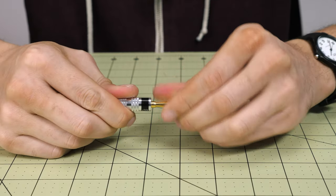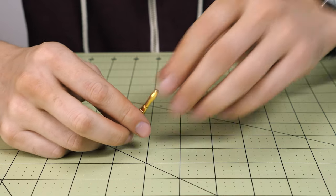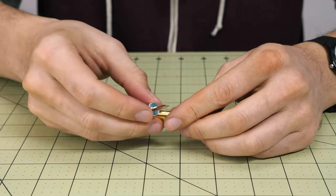First, unscrew the outer barrel of the plug and set it aside. Then, with the included screwdriver, open up the set screws.